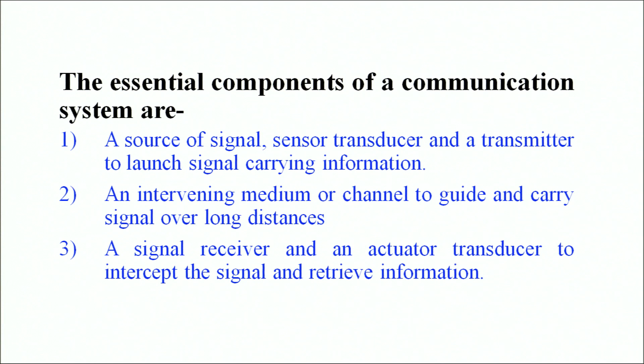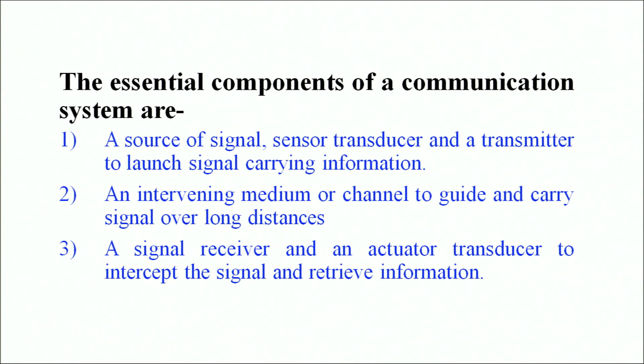A sound signal or a video signal is converted from that form to the electrical form and then passed on to the transmitter, which is ready to launch the signal carrying the information. There is a medium or a channel in between to guide and carry the signal over long distances. Once the signal reaches the other end, a signal receiver and an actuator transducer intercept the signal and retrieve the information — and that is how the information reaches the other end.